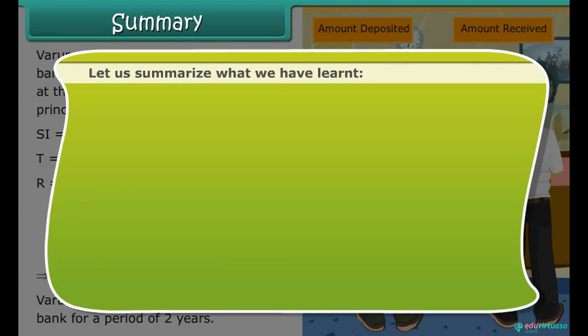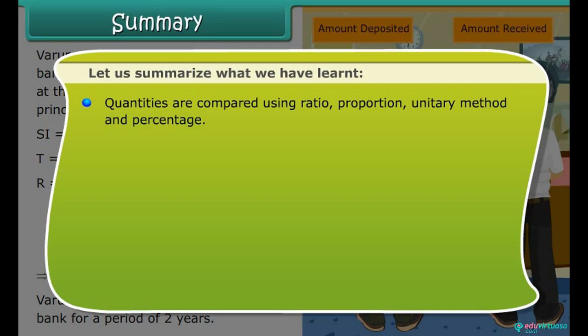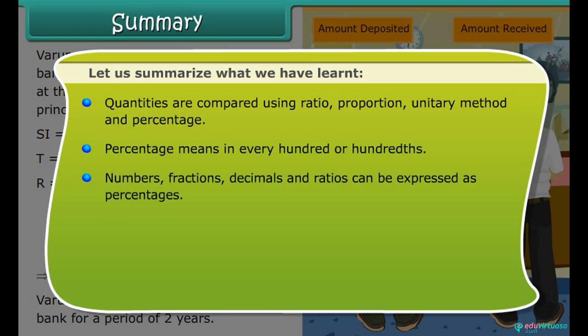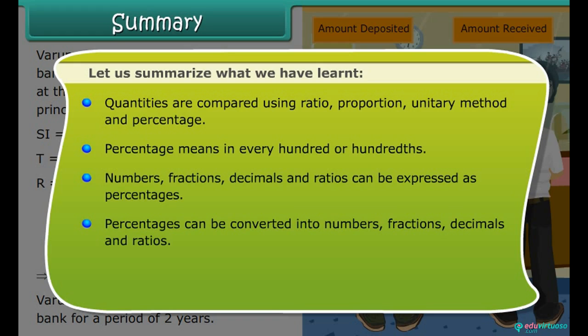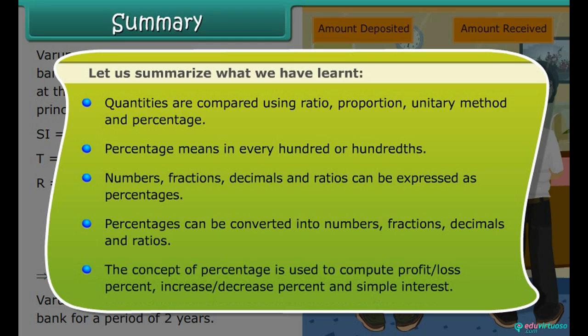Let us summarize what we have learned. Quantities are compared using ratio, proportion, unitary method, and percentage. Percentage means in every hundred or hundredths. Numbers, fractions, decimals, and ratios can be expressed as percentages, and percentages can be converted into numbers, fractions, decimals, and ratios. The concept of percentage is used to compute profit or loss percent, increase or decrease percent, and simple interest.